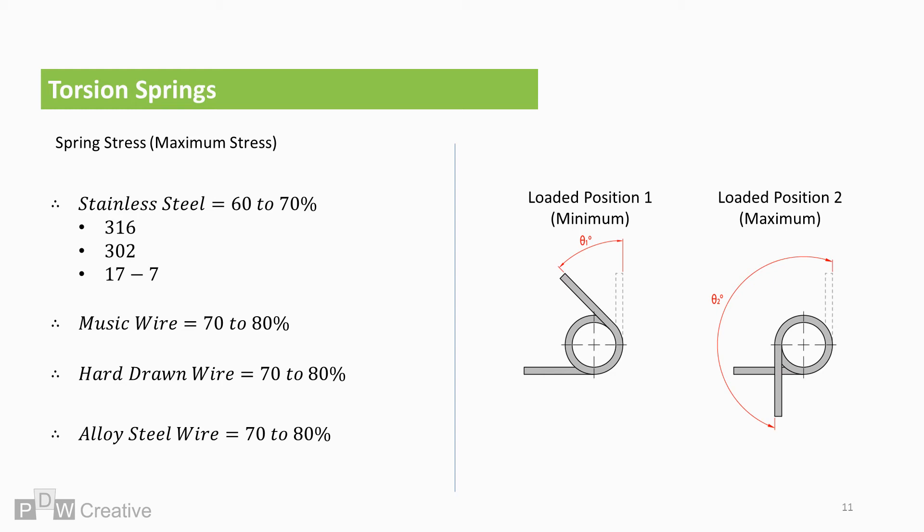Alloy steels tend to be a combination of chrome and silicon. Percentage wise they are similar to music wire and hard drawn wire but tend to be weaker steel. Each of the materials shown have pros and cons. Stainless steels tend to be less magnetic than other types. It also has good corrosion resistance.